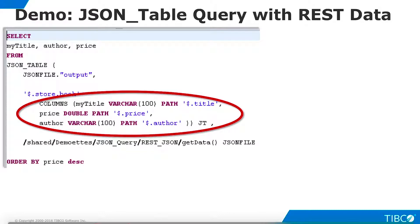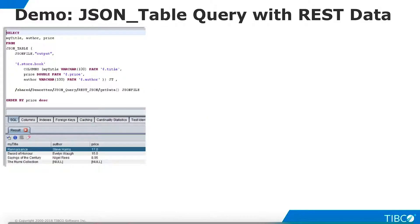The third element is the columns clause. For each column, we define an alias, a SQL data type, and a path to the column. In these path expressions, the dollar sign references the row provider element. We also define an alias, jt, which is optional. We execute the view and a SQL result set is returned.